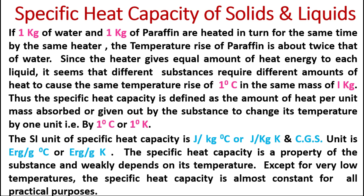In the same mass of one kg, the specific heat capacity is defined as the amount of heat per unit mass absorbed or given out by the substance to change its temperature by one unit — that is, by one degree centigrade or by one degree Kelvin.